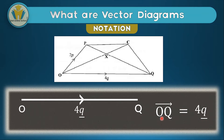You should understand that if these two letters are switched, it means we are moving in the opposite direction. So if we said QO instead of OQ, this vector would change to minus 4q. Always note this. Now practice: pause the video and represent vector OP in vector notation.